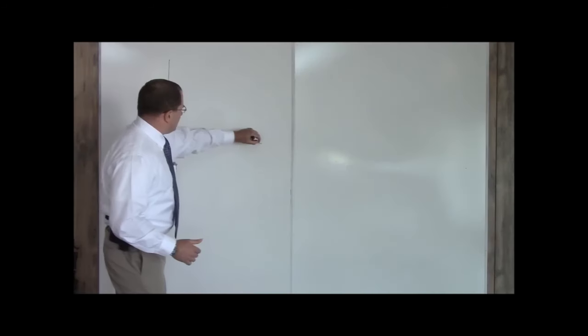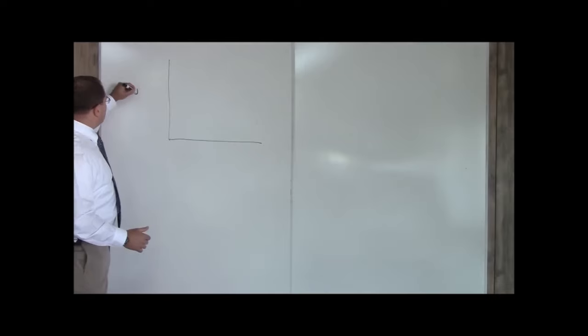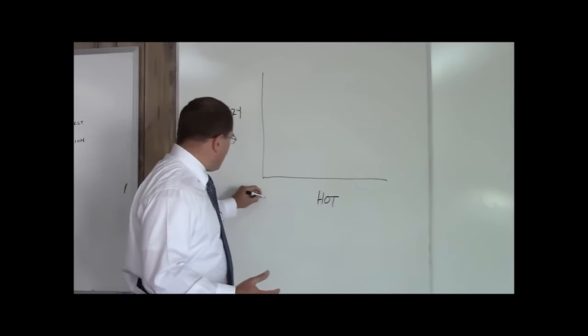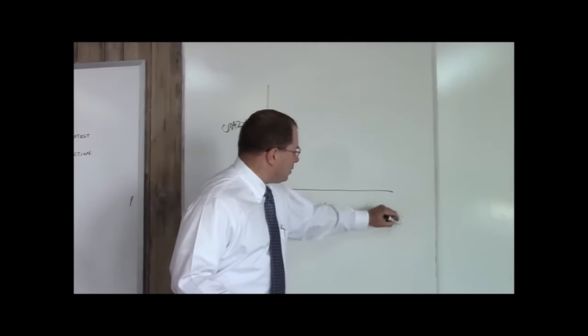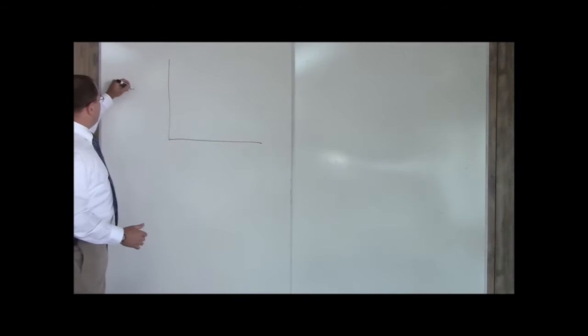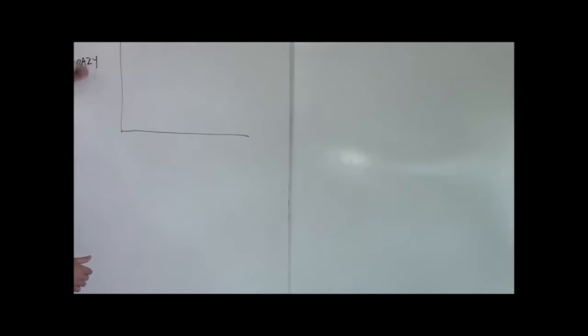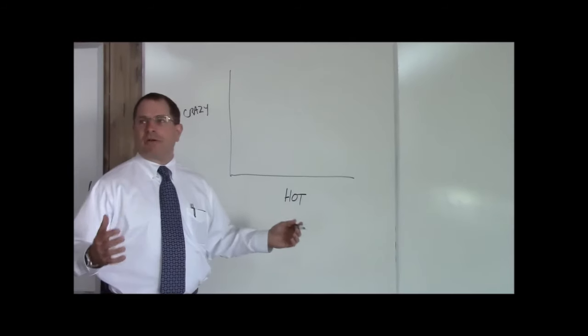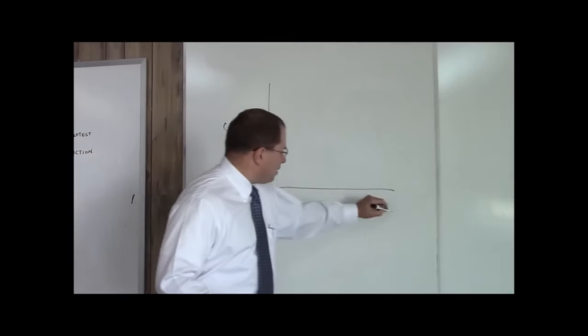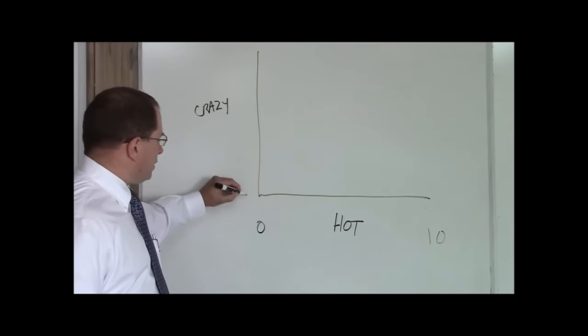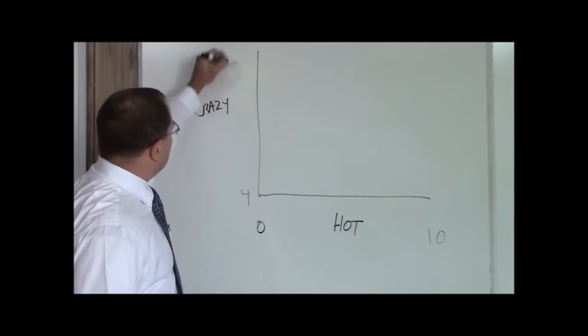So what is the Crazy Hot Matrix? Well, if you didn't know, it was a scale that was done about five, six years ago on Crazy Hot Women and where you should be in the Crazy Hot Matrix when approaching these women. The Hot Matrix goes from zero to 10 and the Crazy Axis goes from four to 10. You have your Crazy Axis and your Hot Axis. Hot is measured from zero to 10. Crazy is measured from four to 10 because there's no such thing as a woman who's not at least a four crazy.